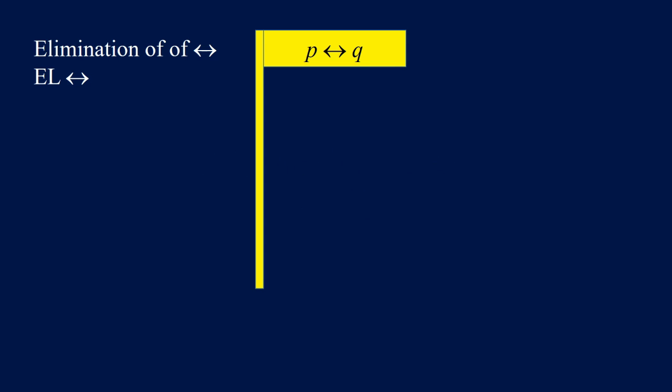Elimination of biconditional — if we have P if and only if Q in the flag or under the flag, then we can conclude P implies Q.